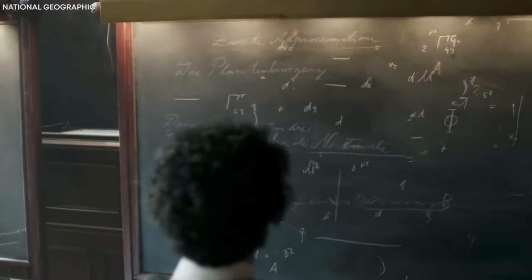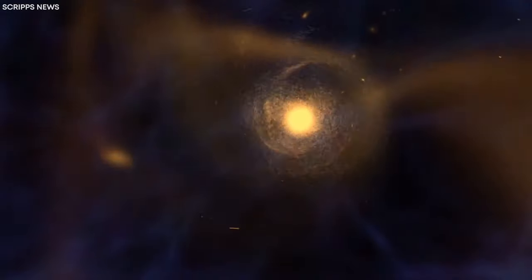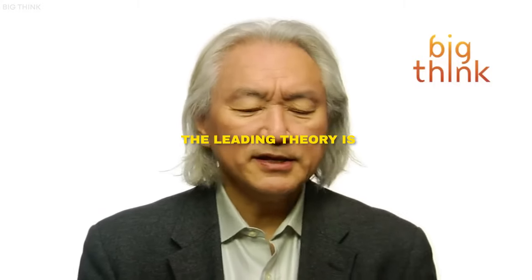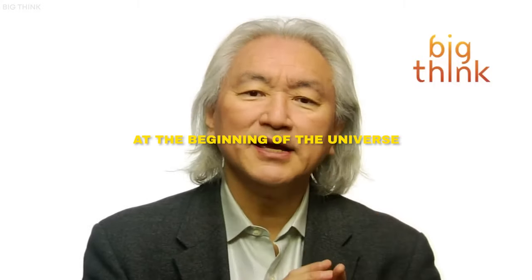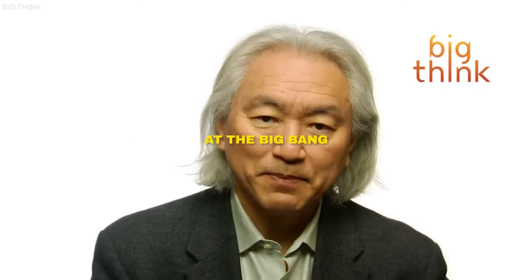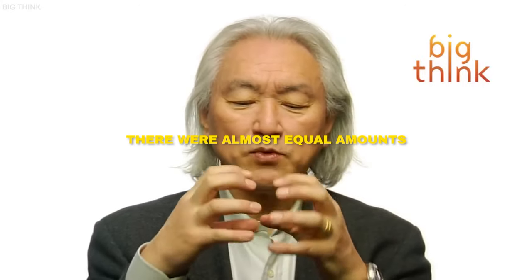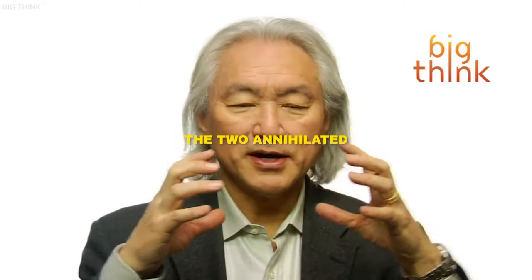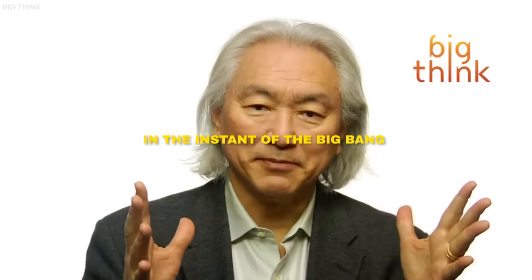However, the fundamental laws of physics suggest that matter and antimatter should have been created in equal amounts during the Big Bang. The leading theory is, at the beginning of the universe, at the Big Bang, there were almost equal amounts of matter and antimatter. The two annihilated in the incident of the Big Bang.